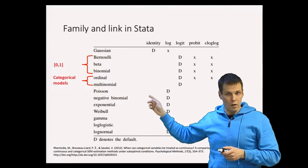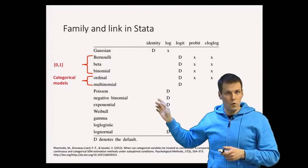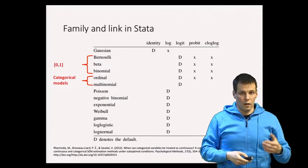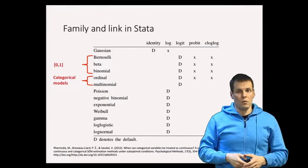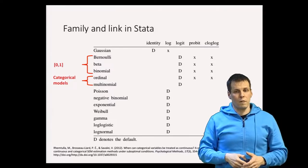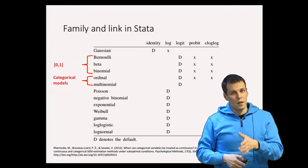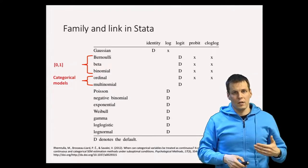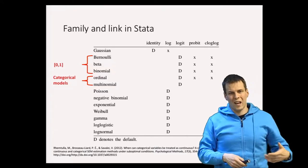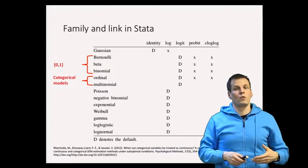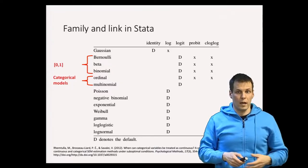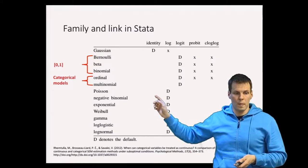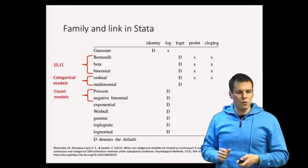Multinomial is for categorical variables without a natural order. For example, if you're studying which country a company expands to — Finland, Sweden, or Norway — that's a categorical variable where the different countries don't have an order. You would use multinomial regression, or GLM with the multinomial distribution.